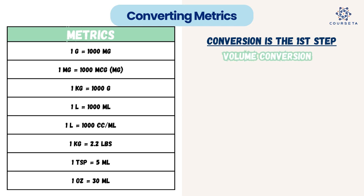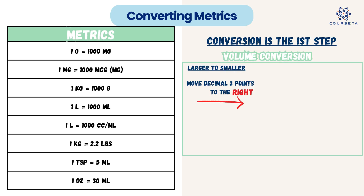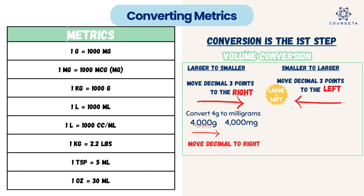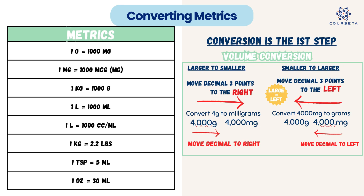How do you convert volume — whether that's a dose or an actual volume in milliliters or liters? From larger to smaller, you move the decimal place three points to the right. For example, to convert four grams to milligrams, you just move the decimal three points to the right, and four grams equals 4,000 milligrams. From smaller to larger, you move the decimal point three points to the left — think 'large equals left.' So if you have 4,000 milligrams and want to convert to grams, move the decimal left three times and you get four grams.